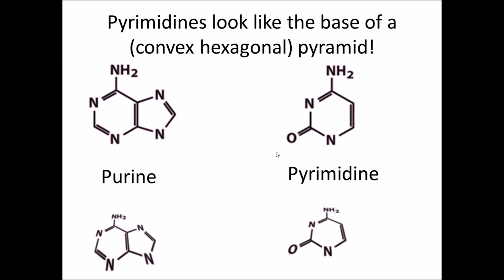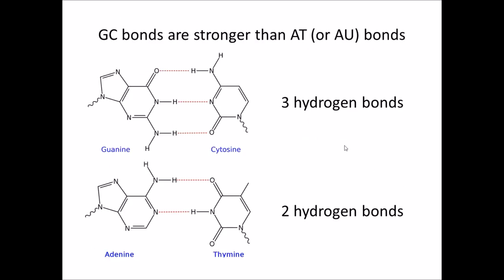To remember that the single ring structure is a pyrimidine and the double ring is a purine: pyrimidine looks like the base of a pyramid — specifically a convex hexagonal pyramid. Because GC bonds have three hydrogen bonds, they're actually stronger than AT or AU bonds. Thymine and uracil have an extra oxygen that doesn't participate in hydrogen bonding. Hydrogen bonding occurs due to a partial negative charge on the oxygens and a partial positive charge on the hydrogens attached to nitrogens. The methyl group does not participate in hydrogen bonding, which is why removing it to get uracil leaves hydrogen bonding exactly the same.